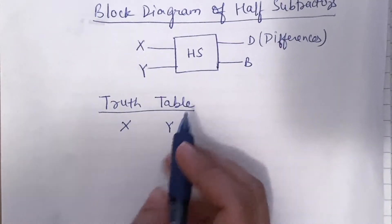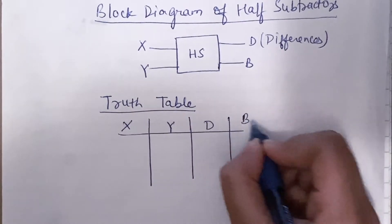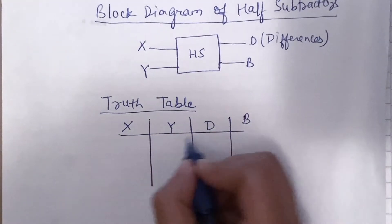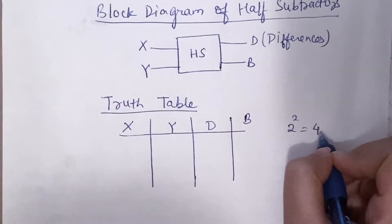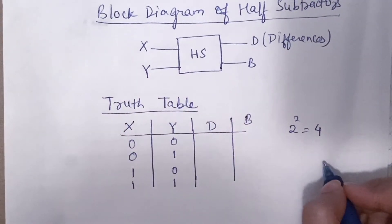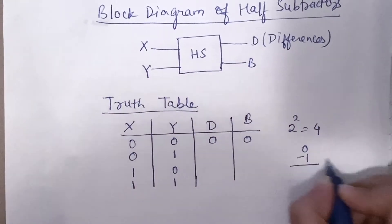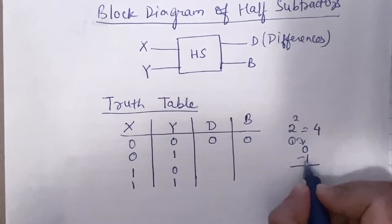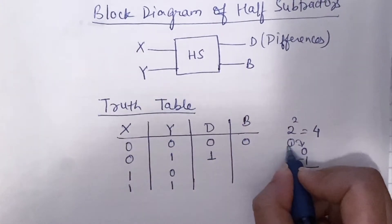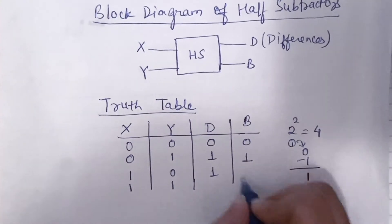Now let's find the truth table of the half subtractor. X and Y are both inputs, D is the difference, and B is the borrow. Since we have two inputs, there are 2² = 4 input combinations: 00, 01, 10, 11. When we compute 0 minus 0, the difference is 0 and borrow is 0. For 0 minus 1, we need to borrow, so the difference is 1 and borrow is 1. For 1 minus 0, the difference is 1 and borrow is 0.